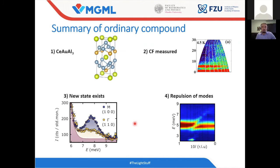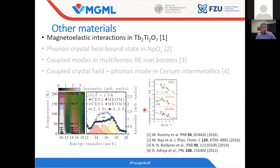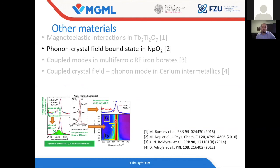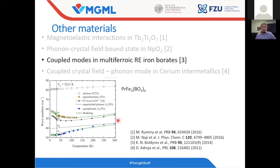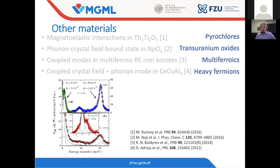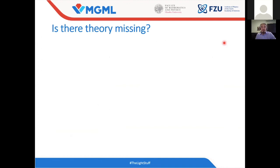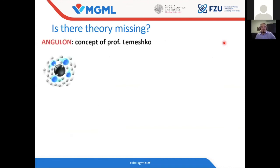Let me summarize the results. We had a very simple, ordinary compound where everything was measured. Normally you would not get more beam time because everyone would say it is already done and not interesting. But we did the measurement again using a single crystal and a triple-axis machine, and found two new things not seen before. This effect exists in other materials too: a similar effect was detected in a pyrochlore by Ruminy's group at PSI, in neptunium dioxide at Carlos, in multiferroic rare earth borates from the Russian Academy of Sciences, and in heavy fermion compounds.